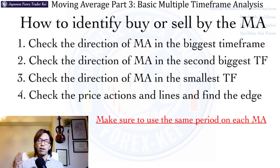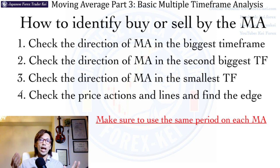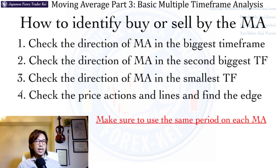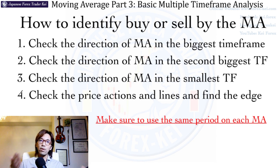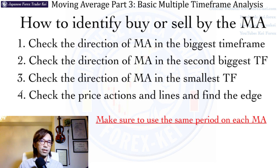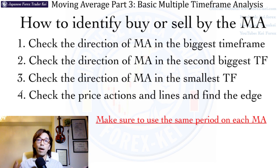In Japan we say, rewards come to those who wait — and usually we say this after you've done the best things you can possibly do and there's nothing more to do, you just wait for the reward. So in Forex trading too, you wait until the market direction is synchronized in bigger and smaller timeframes. Then you find a true edge on the market by looking at the lines and price actions, and that can give you a big reward.